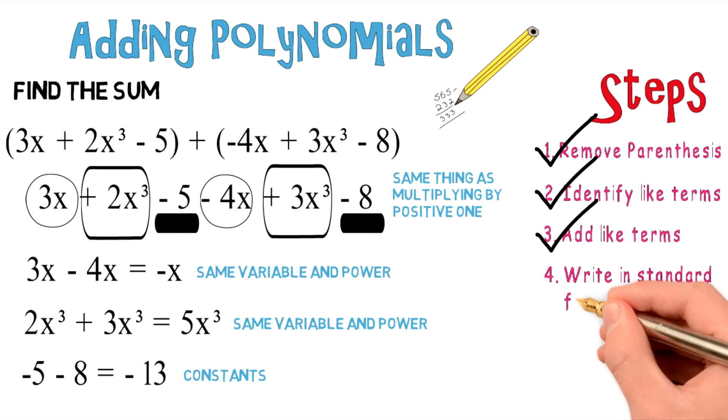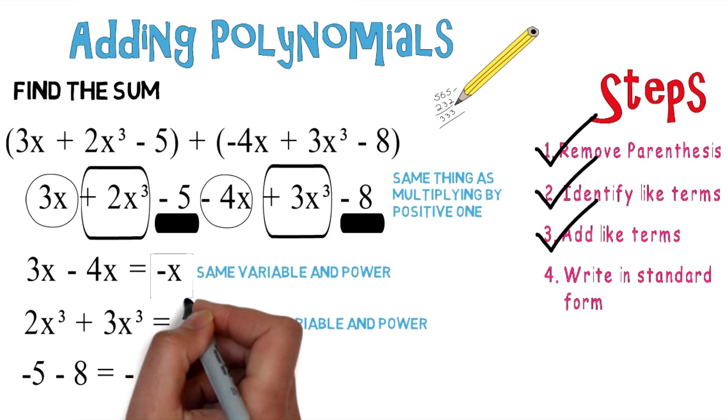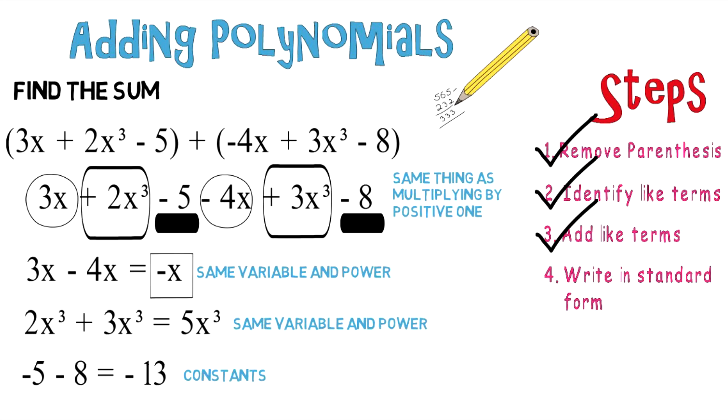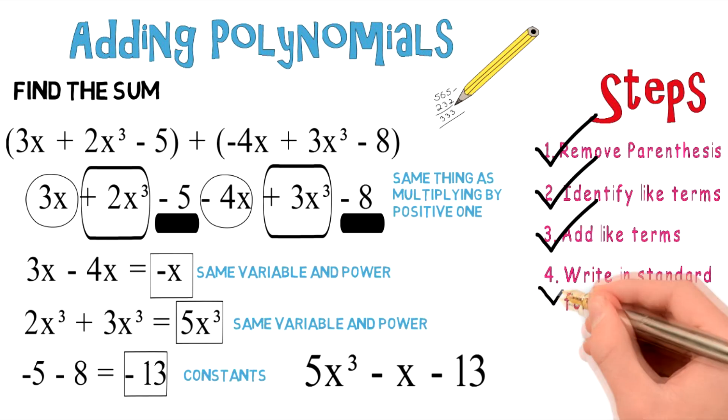Now we want to write this in standard form, which is from highest power to lowest. So what do we have? We have a negative x, we have a 5x to the third power, and a negative 13. Writing that in standard form, 5x to the third power goes first because it's the highest degree, then negative x to the first power and negative 13. So you can check off this step.